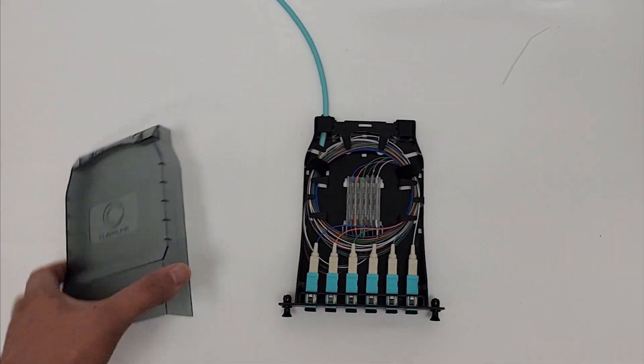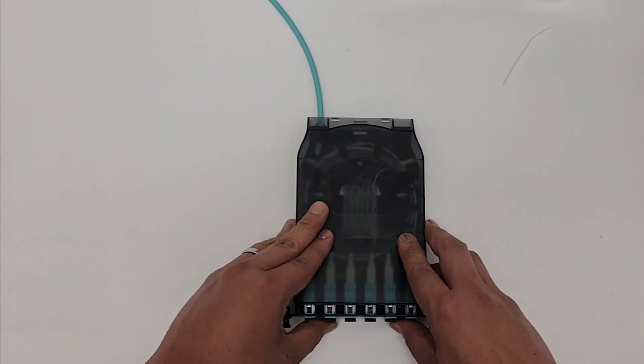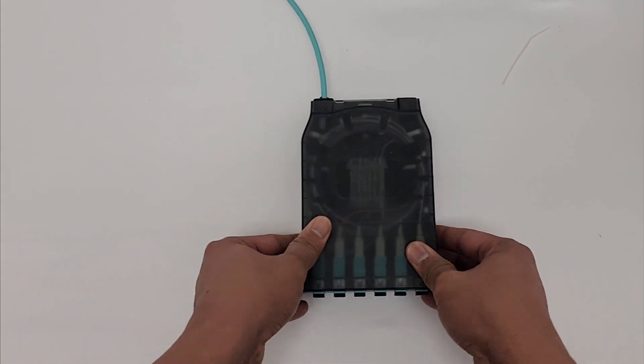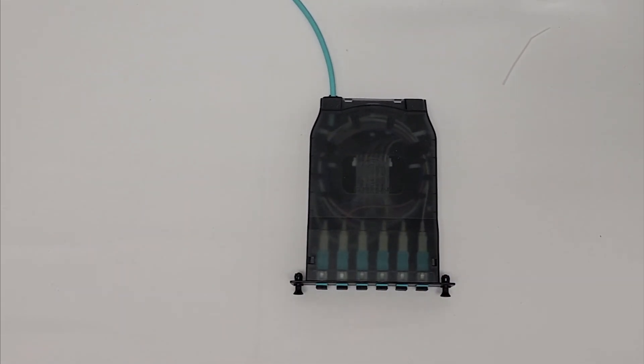Next, install the top cover. You have now completed the installation of your fusion spliced fibers into the Clearline High Density Splice Cassette.